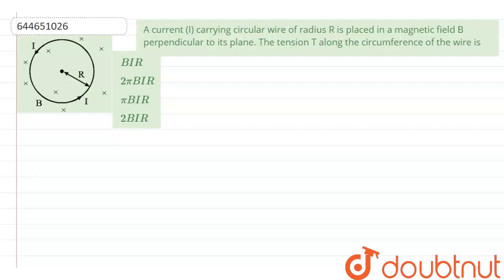Hello everyone, let's start the question. The question says that a current I-carrying circular wire of radius R is placed in a magnetic field B, perpendicular to its plane. The tension T along the circumference of the wire is.